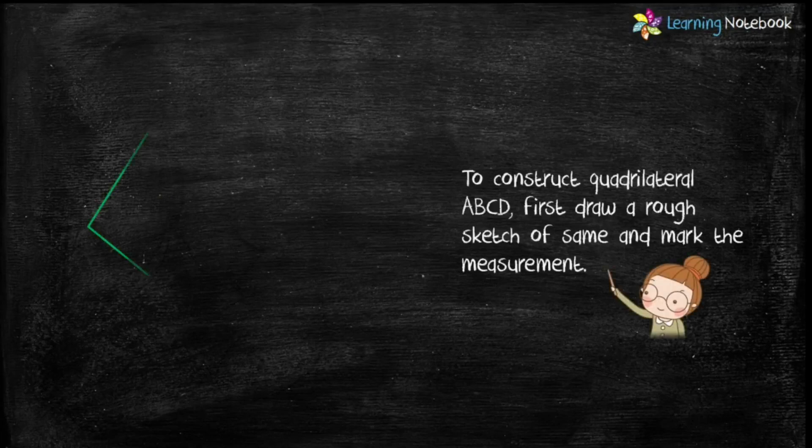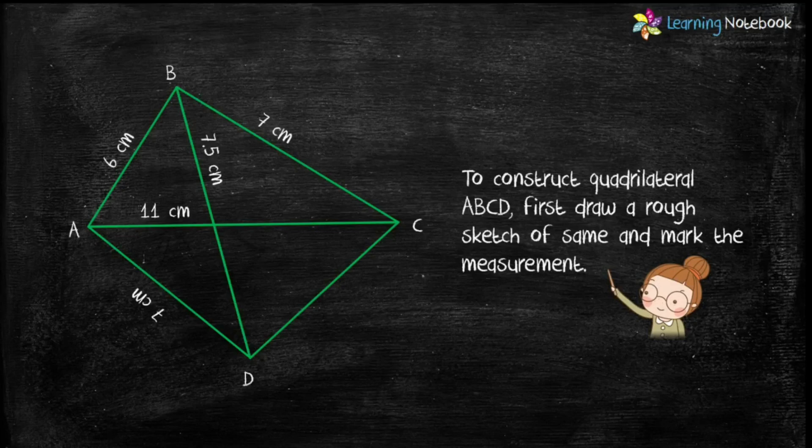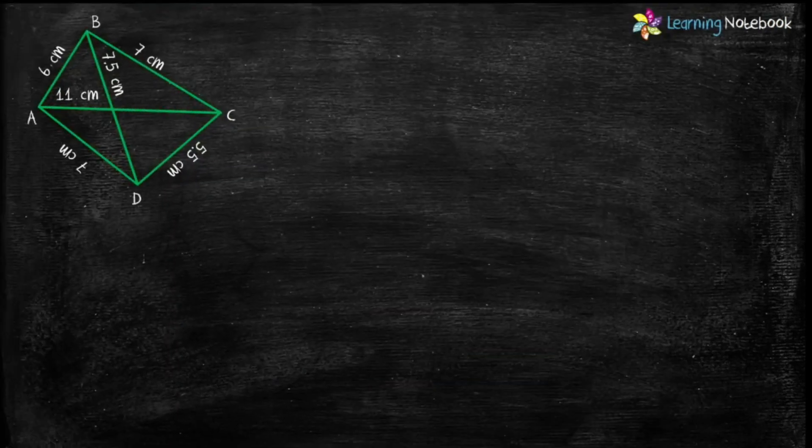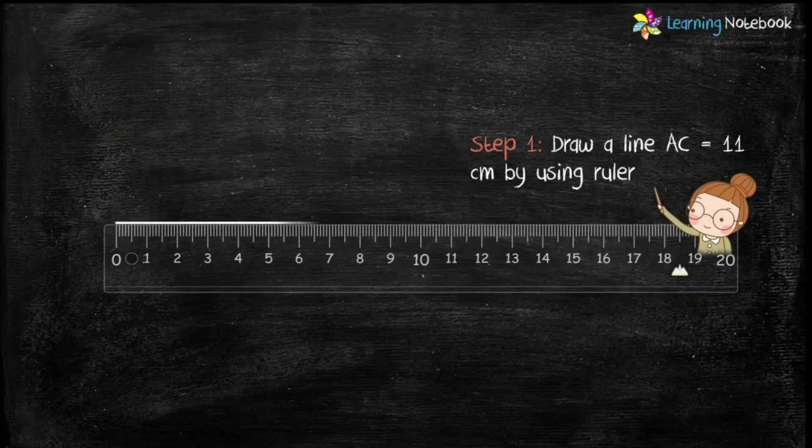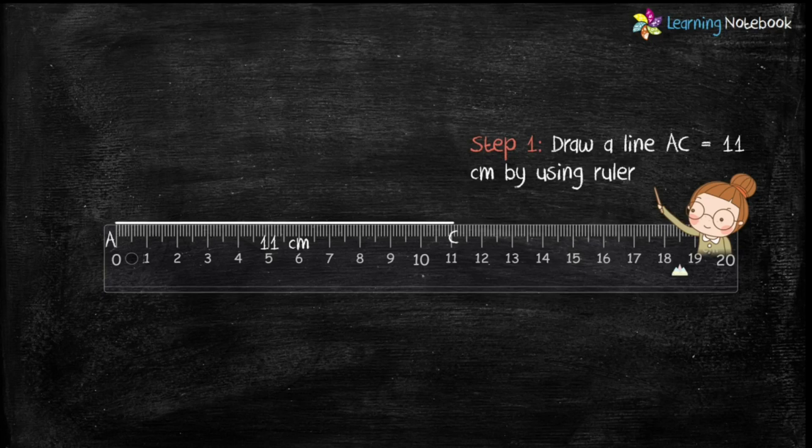To visualize the construction of quadrilateral, let's first draw a rough sketch of the same and mark the given measurements. So let's start the construction by constructing the diagonal first. Step 1 is draw a line AC equals to 11 centimeter with the help of a ruler.